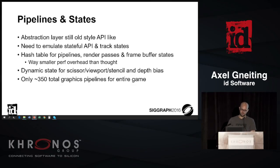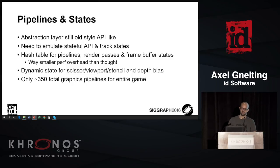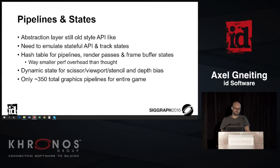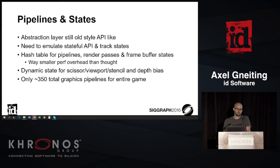For pipelines and states, we had a similar problem to the speaker before — we have an old-style API, so we emulate that with state tracking. We use hash tables to look up pipelines, render passes, and framebuffer states. This was actually a really small overhead — barely noticeable in the profile. We use dynamic states for scissor, viewport, stencil, and depth bias, which reduces the hashmap key size quite a bit. And the total game — single-player, multiplayer, and Snap Map — has only 350 total graphics pipelines. So that's really good.